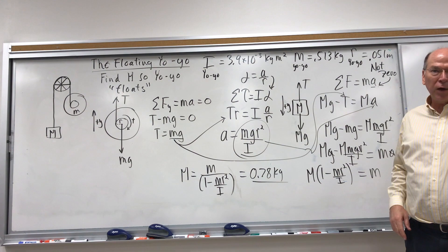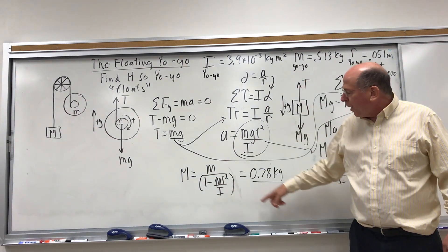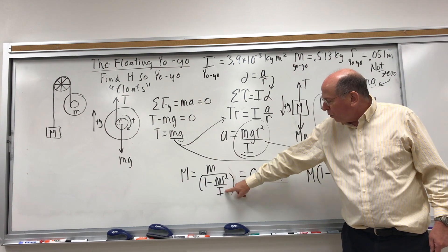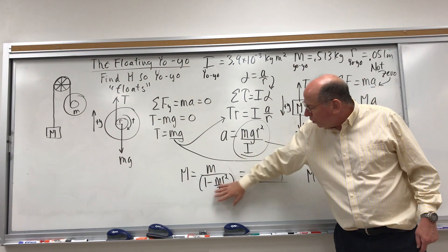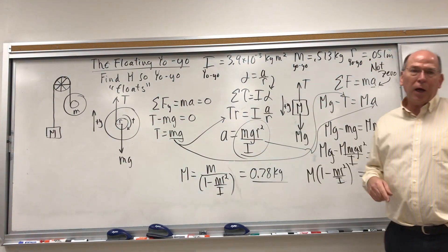You could divide through by little m. You could do other things if you want. I just left it like that. You can see the units come out to kilograms because I have an MR squared, which the denominator is dimensionless, so it's going to be in kilograms and I get 0.78.